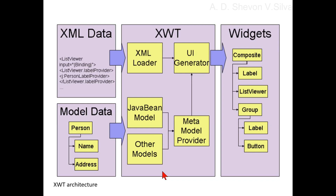Via an extension point, the declarative UI data and model definition are combined by the XWT UI generator to produce the resulting SWT, XWT, and JFace controls at runtime. This XWT architecture is illustrated in this figure.